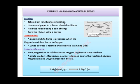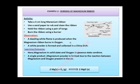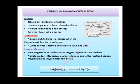For the activity: take a 3 cm long magnesium ribbon, use sandpaper to clean it, hold it with a pair of tongs, and burn it using a burner, as shown in the pictorial representation. The observation is a dazzling white flame when the ribbon burns in oxygen, and a white powder — magnesium oxide — is formed and collected in a China dish. The balanced equation shows magnesium (solid) reacting with oxygen (gas) to form magnesium oxide (solid), indicating a change of state.